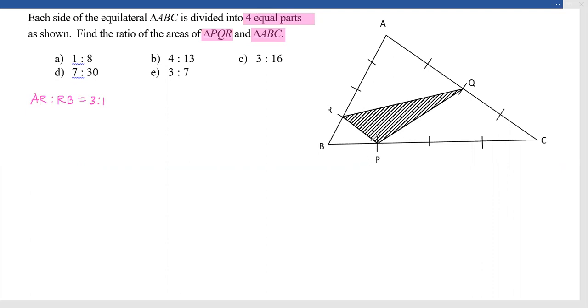Now we need to find out the shaded region, that shaded triangle with respect to the main triangle. For that, what I will do is try to find out individual white triangles. I am trying to get the area of ARQ by area of ABC.